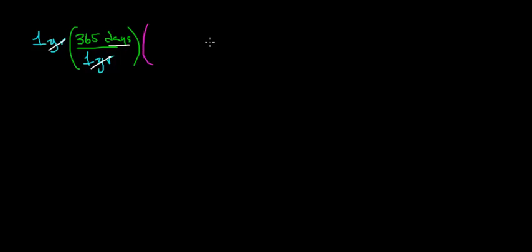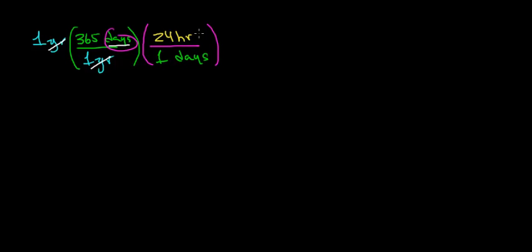The next step is to multiply by a conversion factor that takes us from days over to units of hours. One day has 24 hours, so this unit of day cancels out with the other unit of day, and we're left with units of hours.